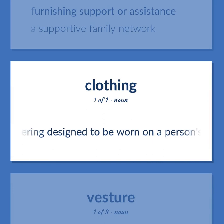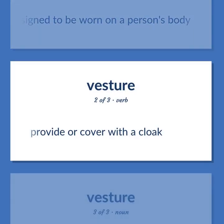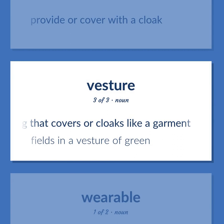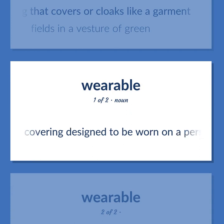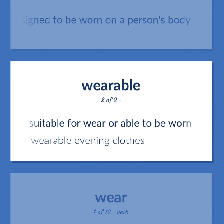A covering designed to be worn on a person's body. Provide or cover with a cloak. Something that covers or cloaks like a garment — fields in a vesture of green. A covering designed to be worn on a person's body. Suitable for wear or able to be worn. Wearable evening clothes.